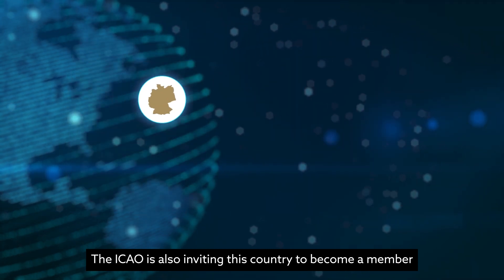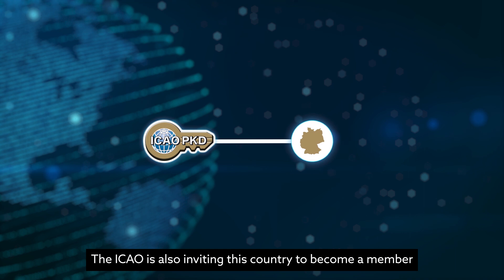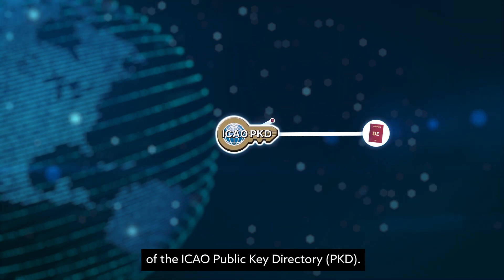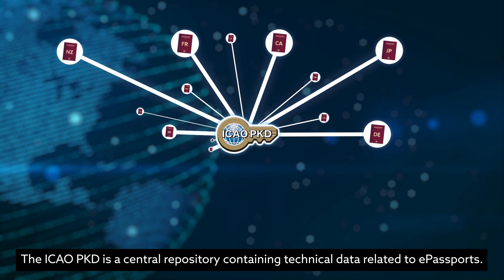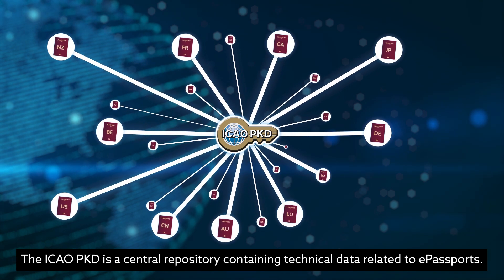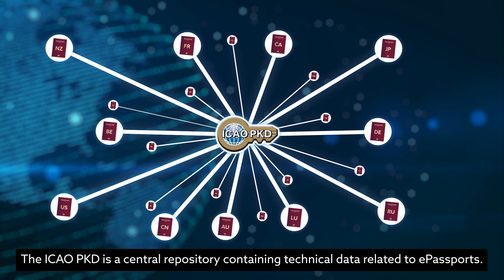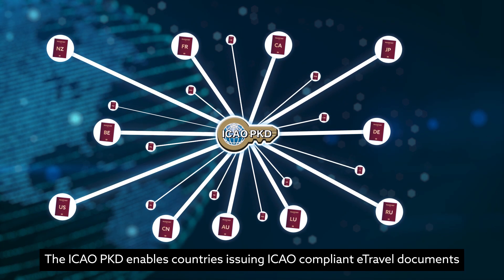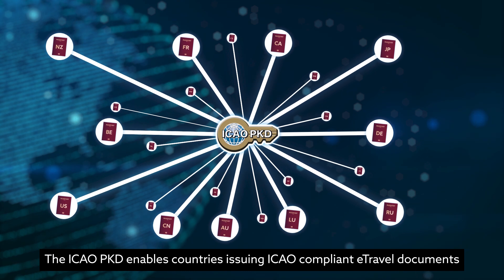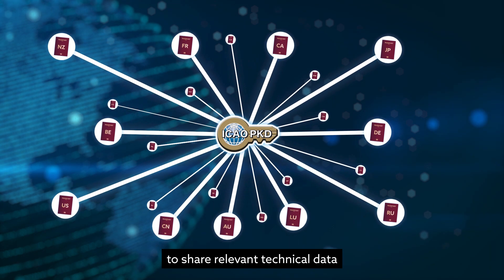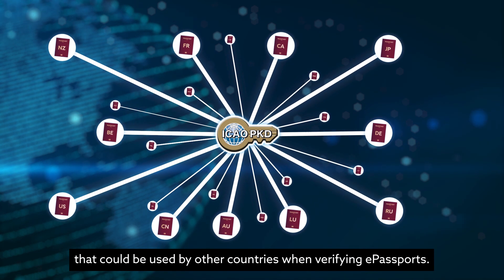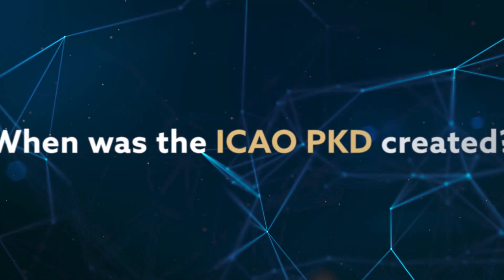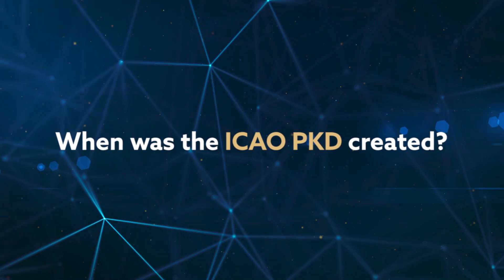The ICAO is also inviting countries to become a member of the ICAO Public Key Directory. The ICAO PKD is a central repository containing technical data related to e-passports. The ICAO PKD enables countries issuing ICAO-compliant e-travel documents to share relevant technical data that could be used by other countries when verifying e-passports.